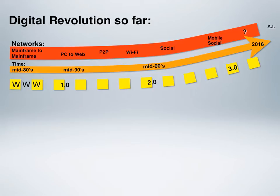Wi-Fi meant we could do all that except wirelessly, in a much more mobile way. Social networking arose from the mid-noughties onwards — that sort of 2000s onwards — and that is leveraging all the connections between computers not just to send computer data, but actually for social means: for communicating, sharing, those kinds of things.